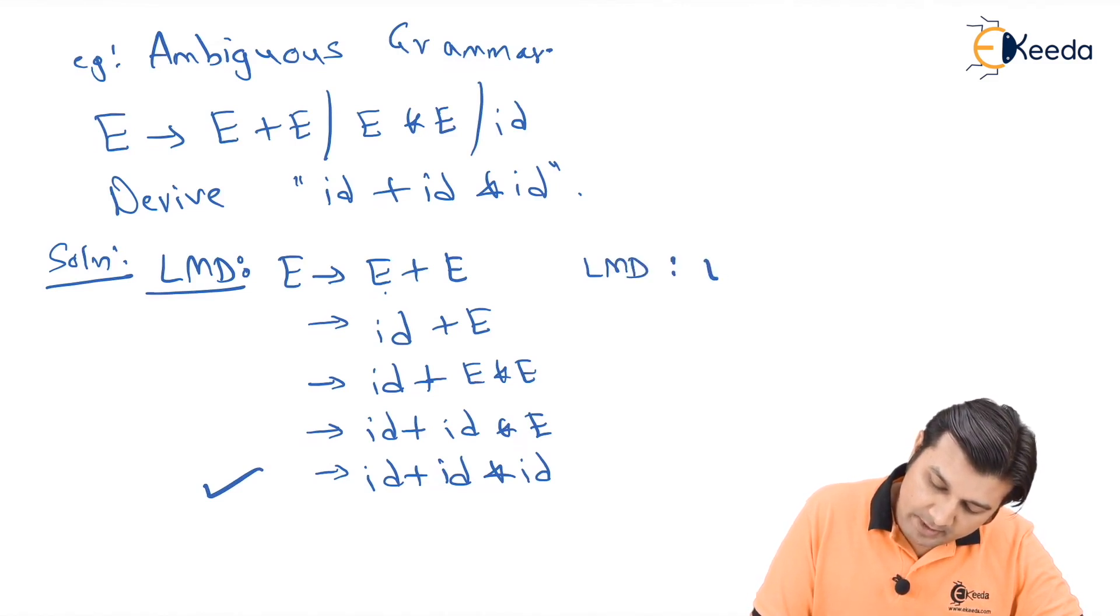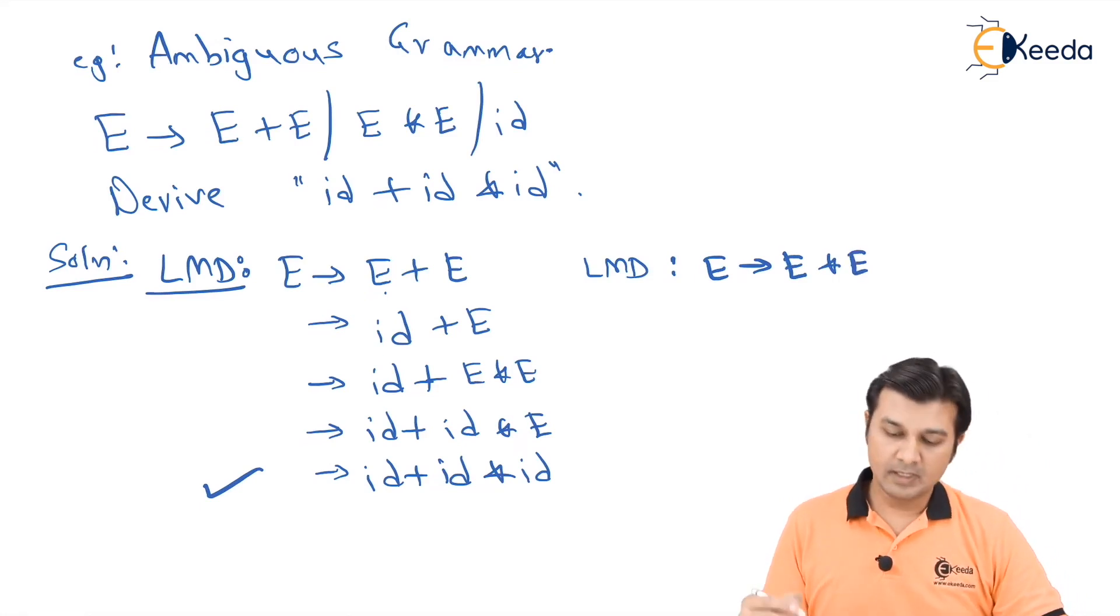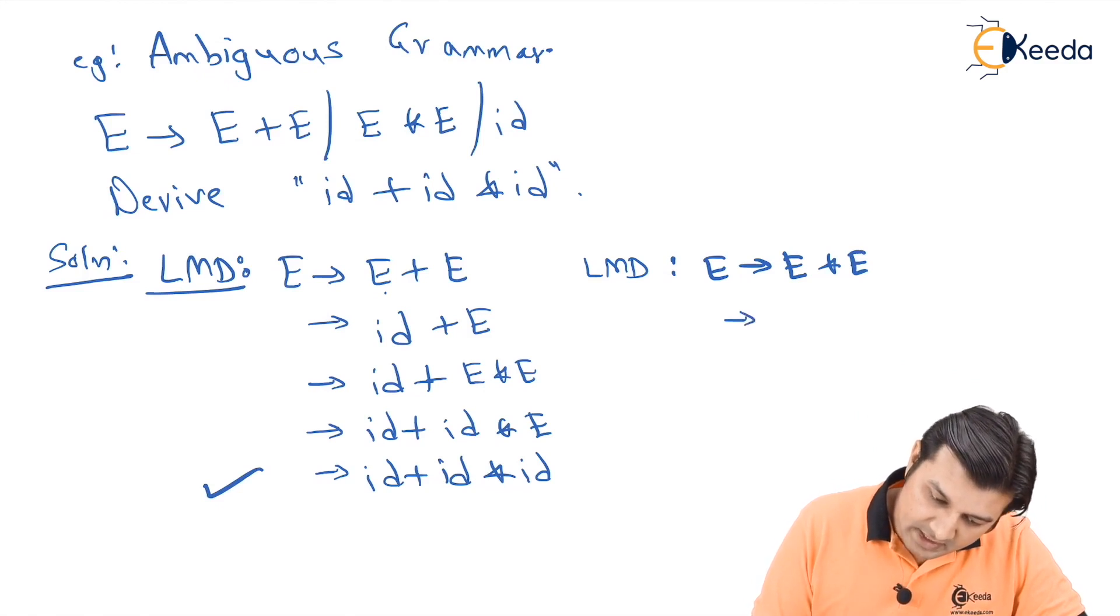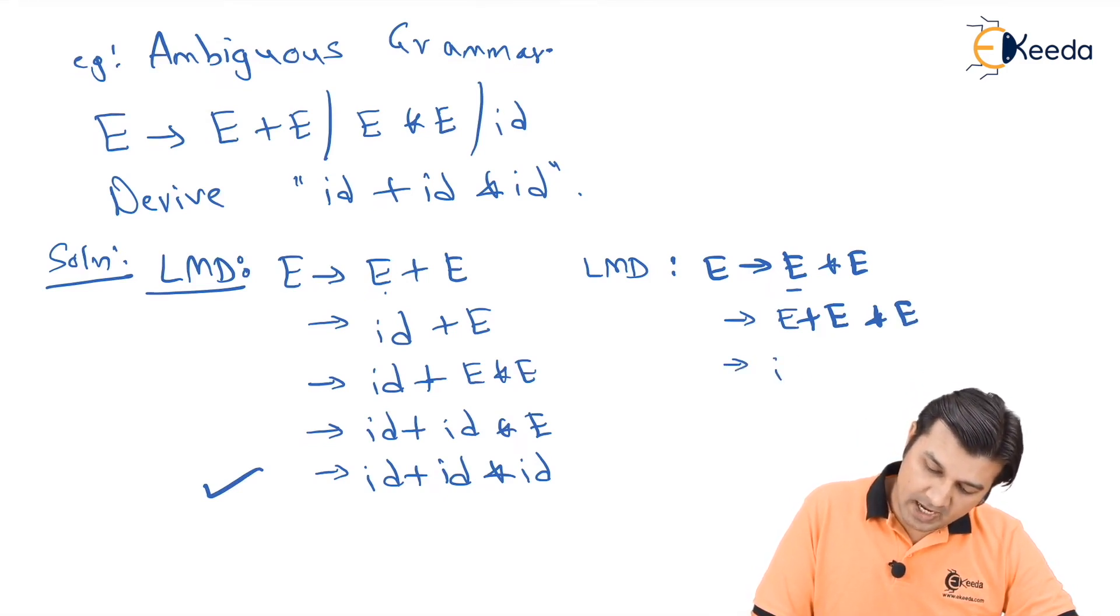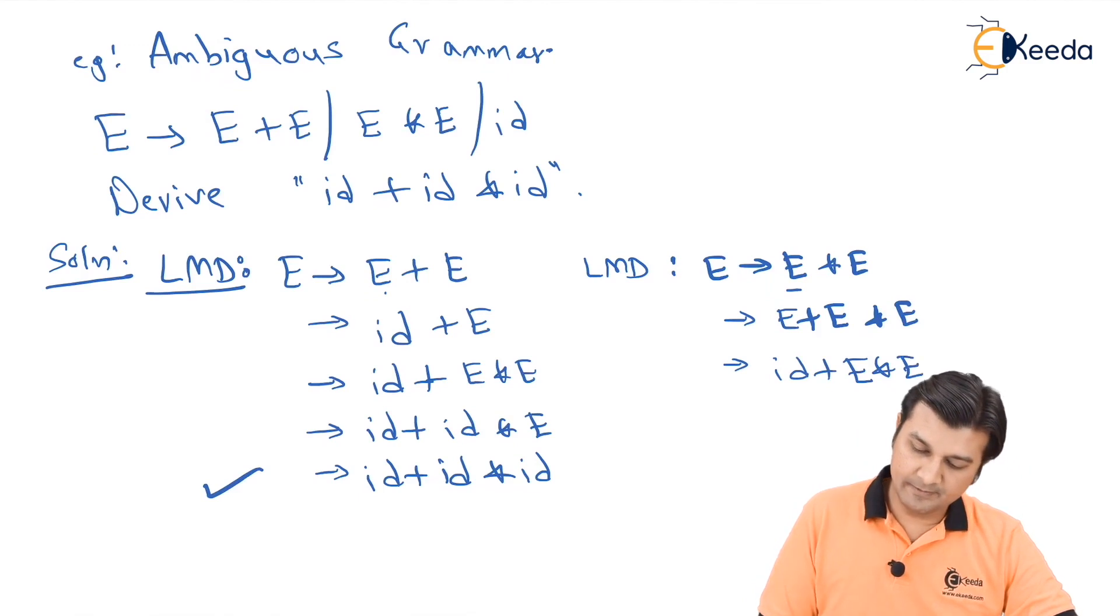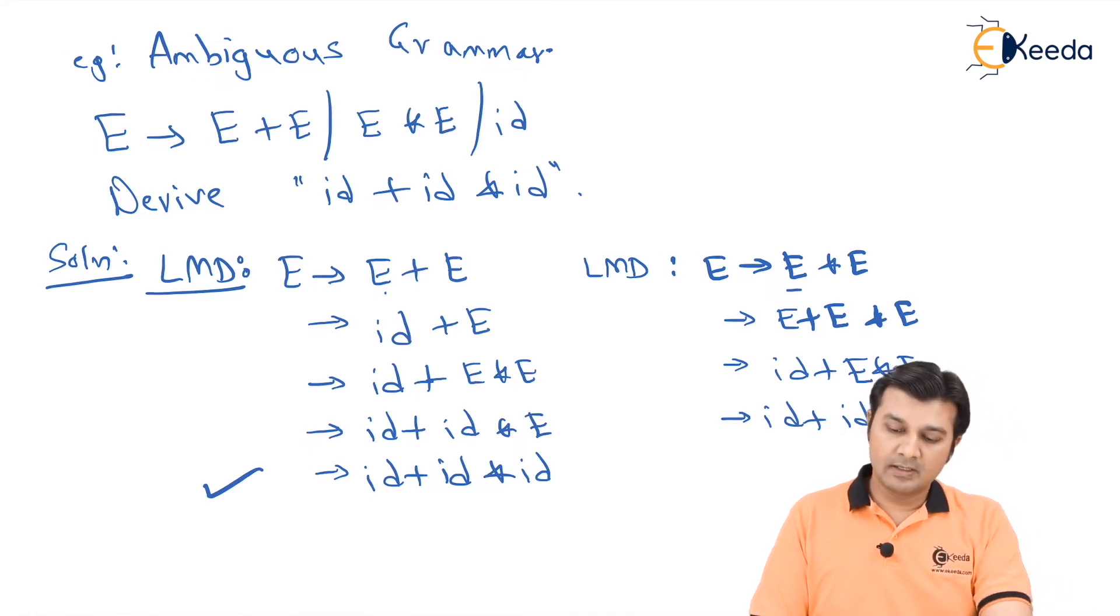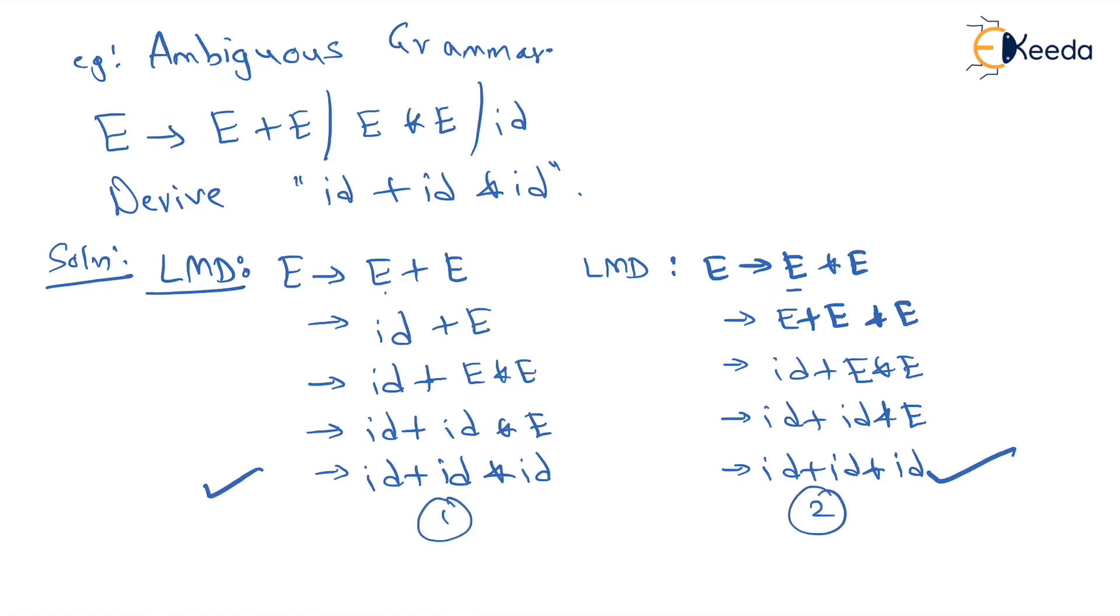Let's see if we are able to do it. Let me write one more LMD, and this time I am thinking of starting with E*E. Initially I say my first E will be replaced by E+E, and *E remains. Next time I replace the leftmost E by id, then E+E*E, then id+id*E, and finally id+id*id.